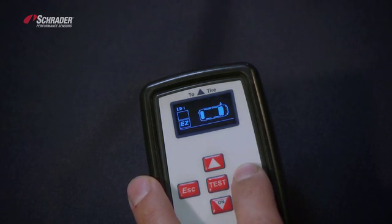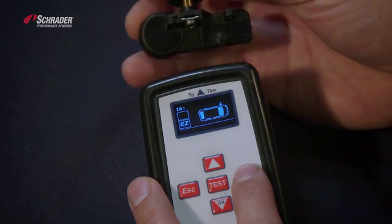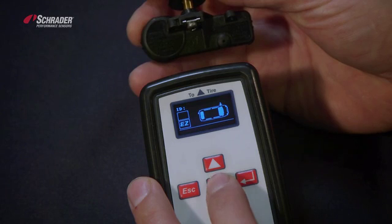We're going to the left front wheel position that has a mechanically broken but electronically functional sensor. We're going to hold the sensor with the valve pointing away from the tool and activate the sensor.